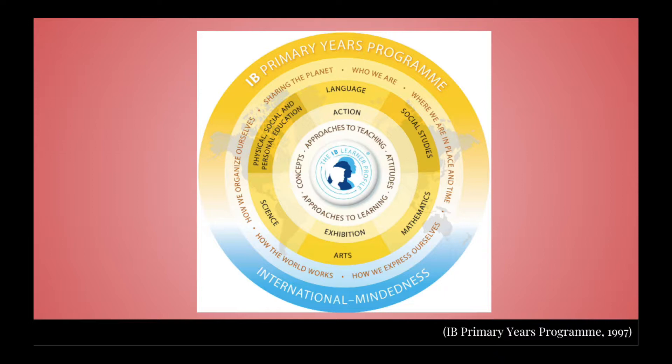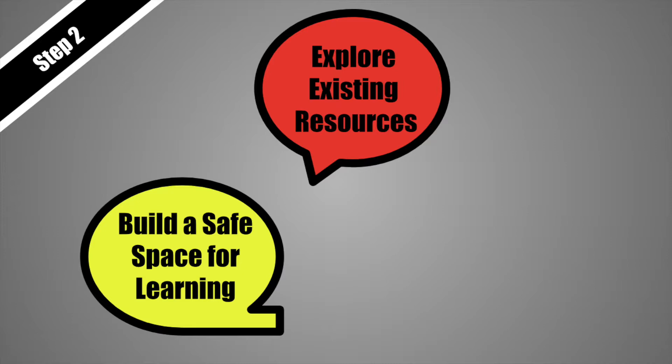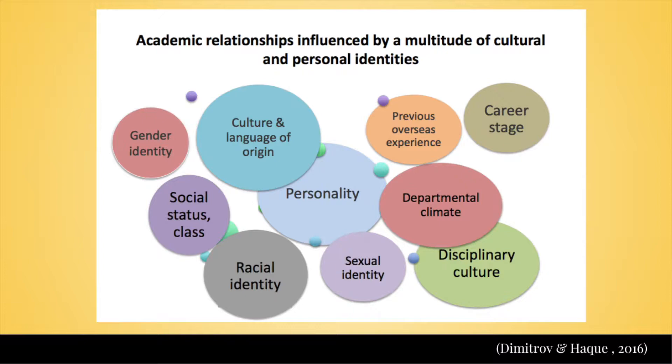My final suggestion for step one is to look outside your province and even your country. I found that the IB Primary Years Program created an incredible visual demonstrating that international mindedness should be at the forefront of your mission, vision, and values. Step two: build a safe space for learning. What if we do all this research and collect all these resources just to find that our students weren't ready for this type of learning?